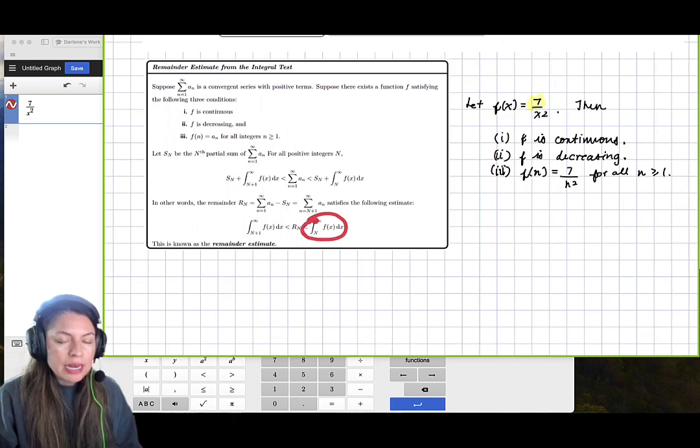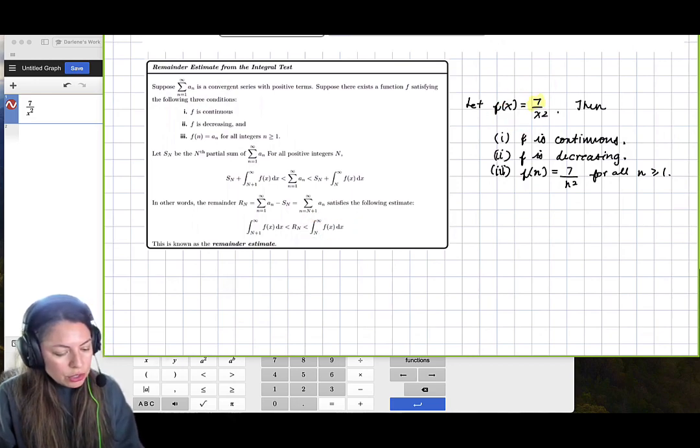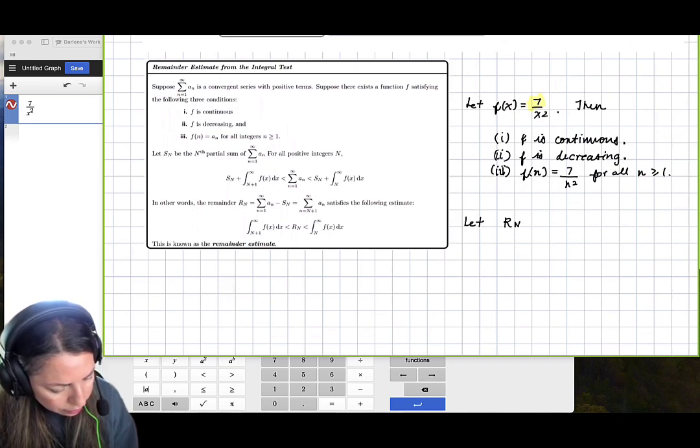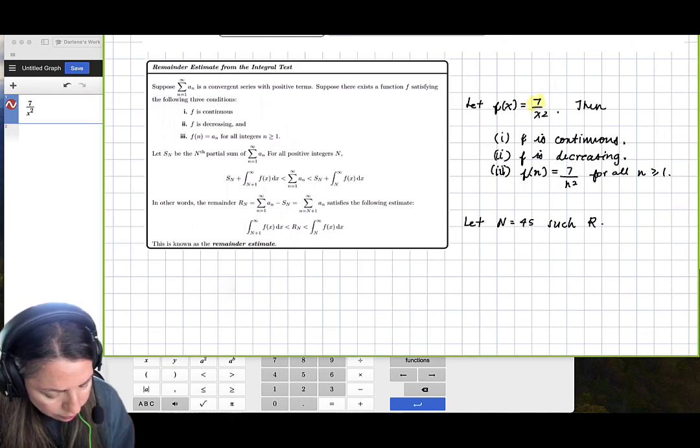And then we can go ahead and set up the integral. We've already defined f of x right here. So now we know that r sub n, let n equal 45 such that r sub 45 is the remainder estimate.